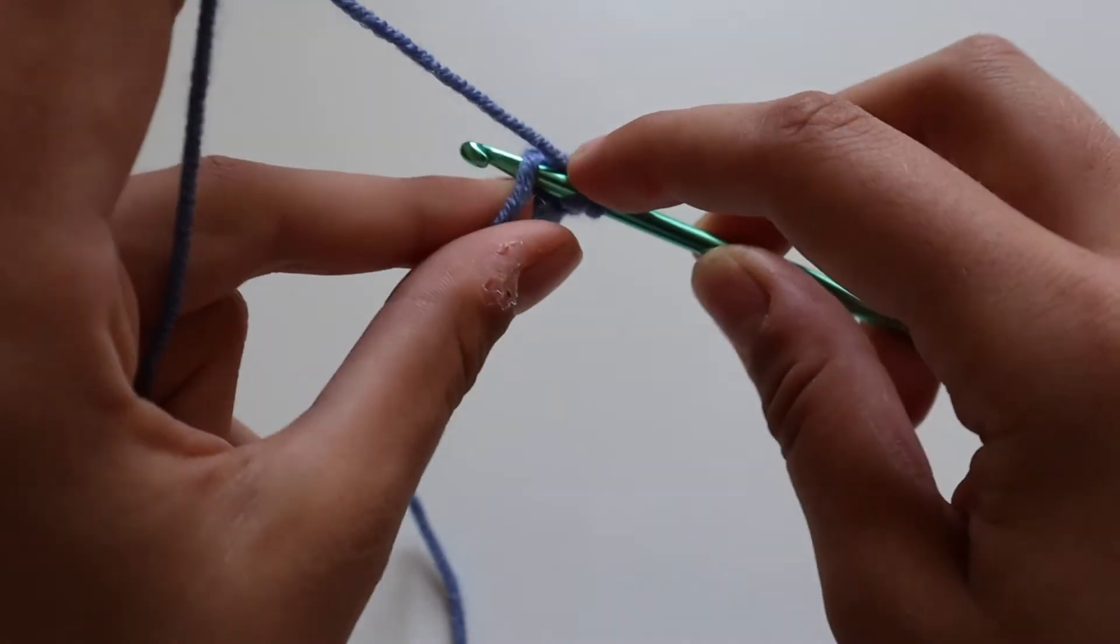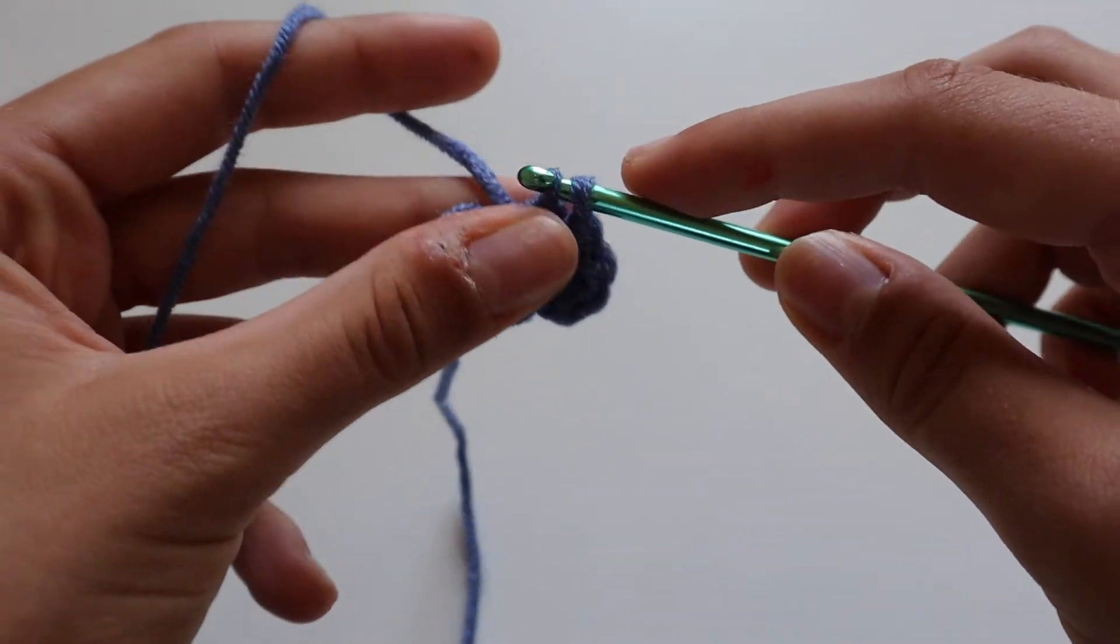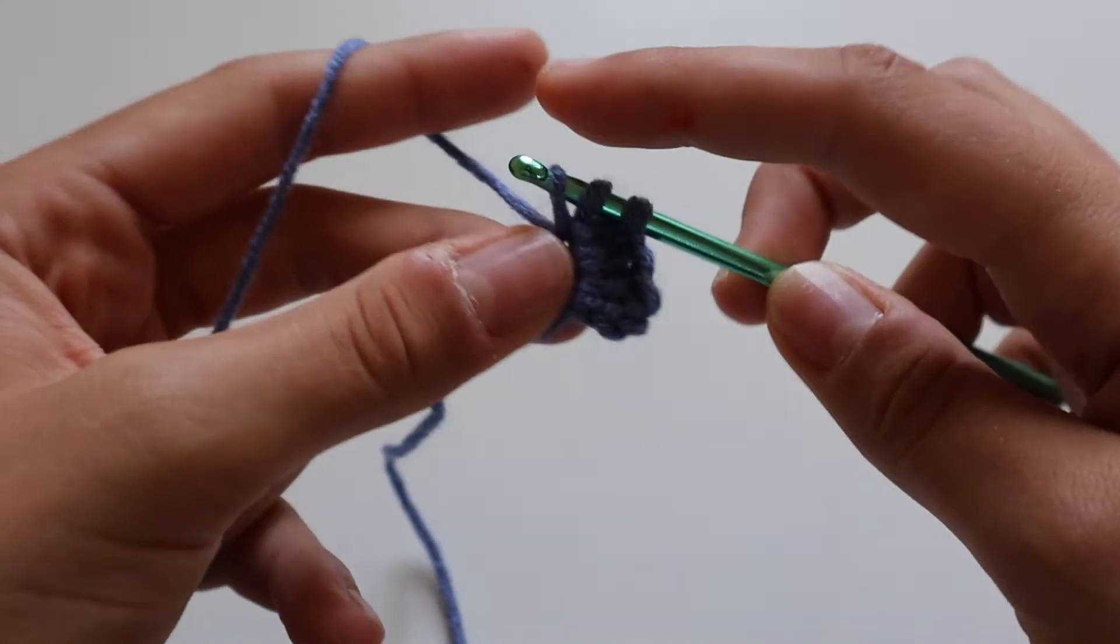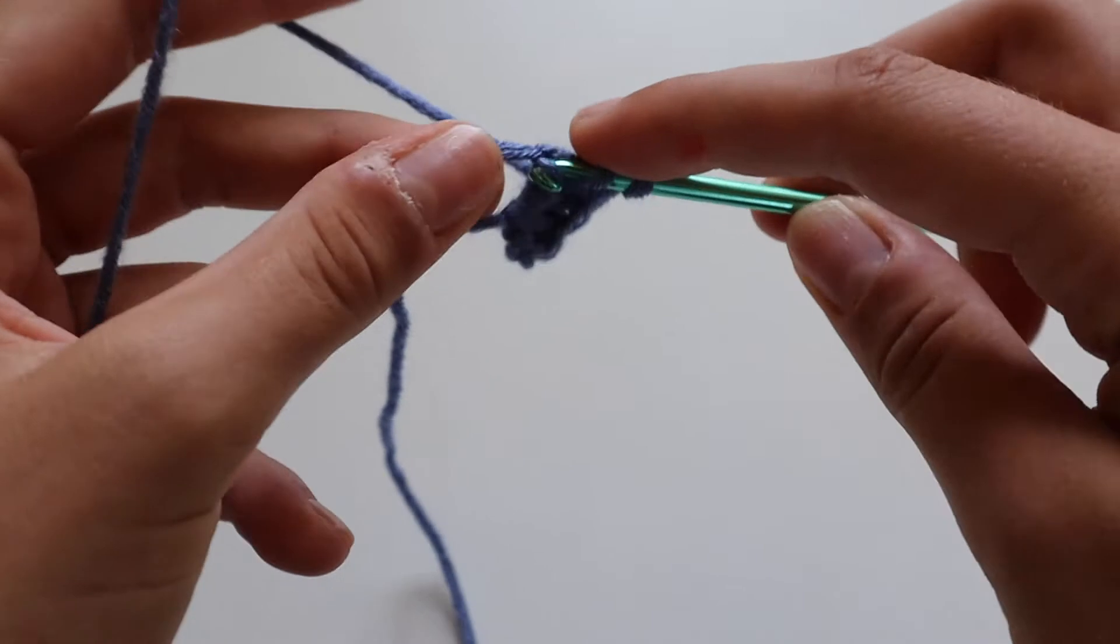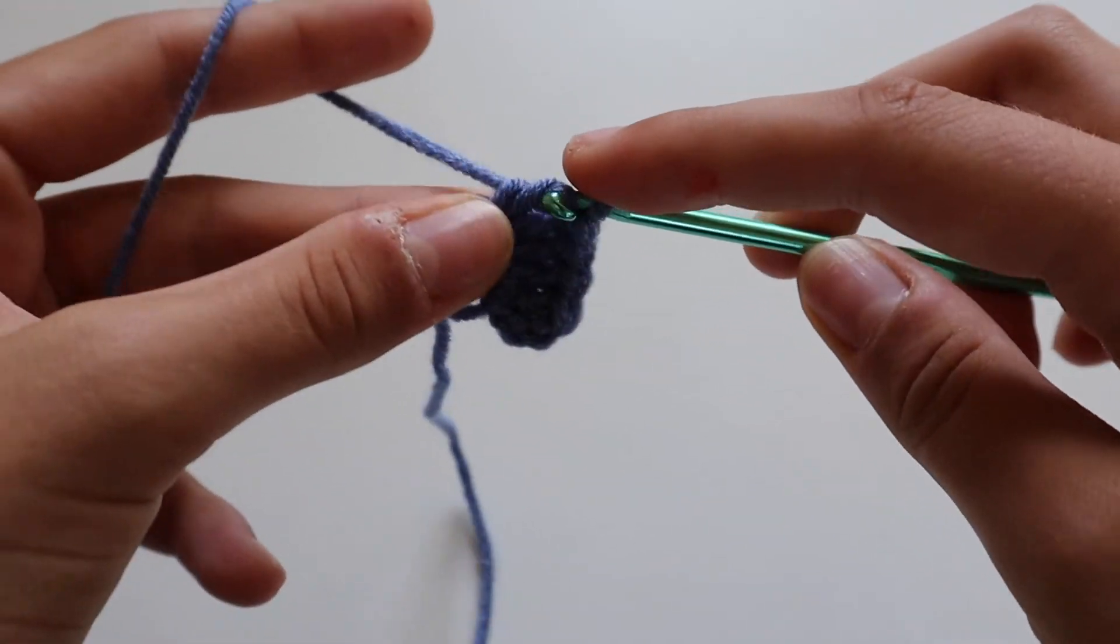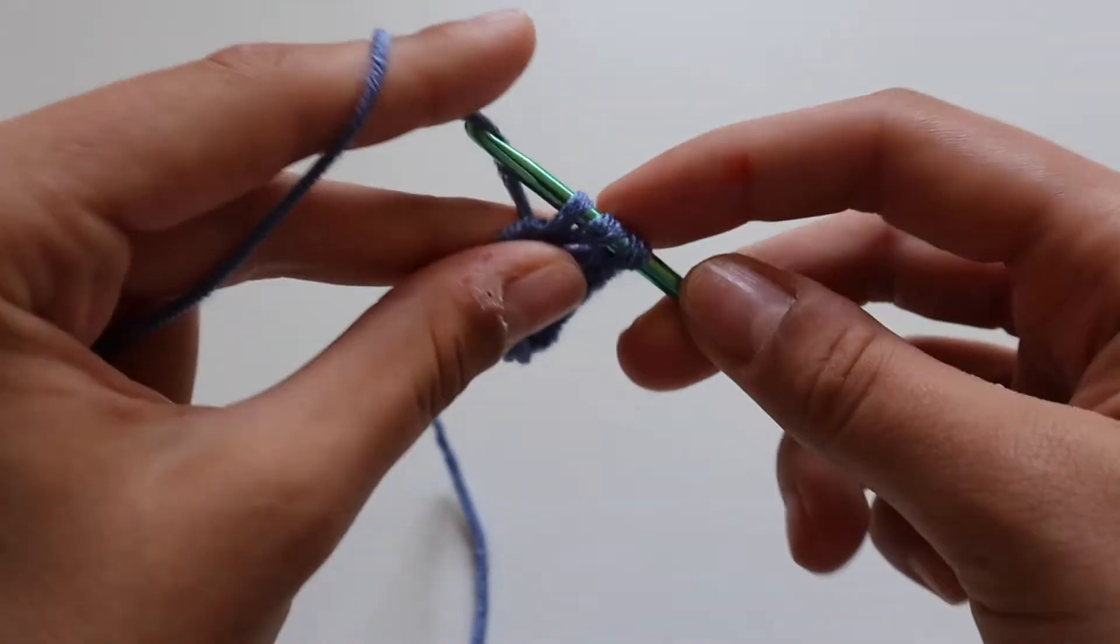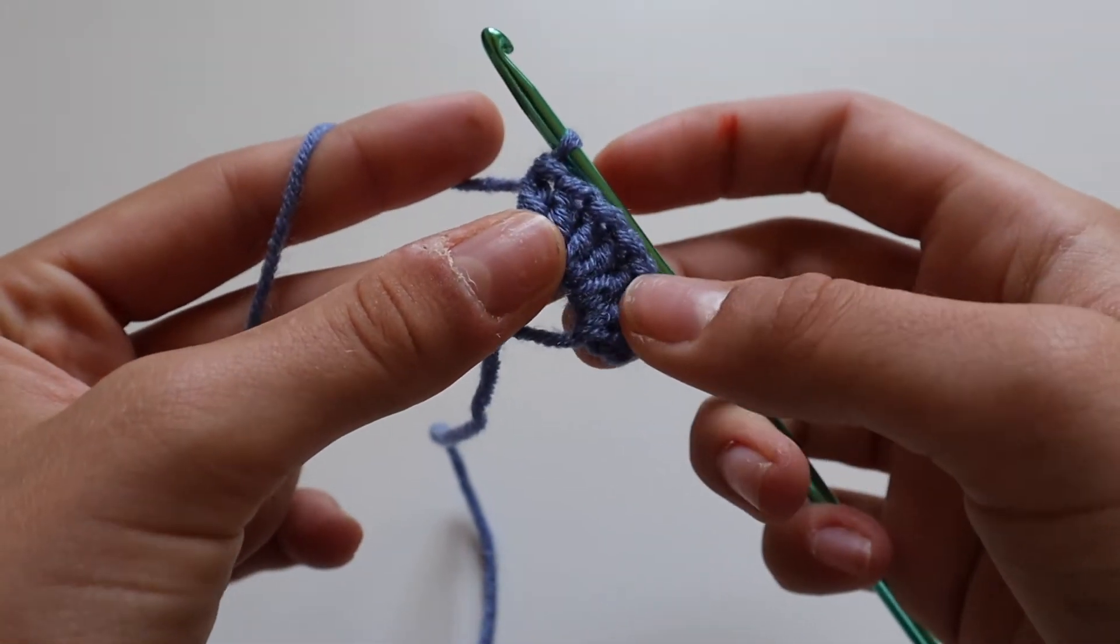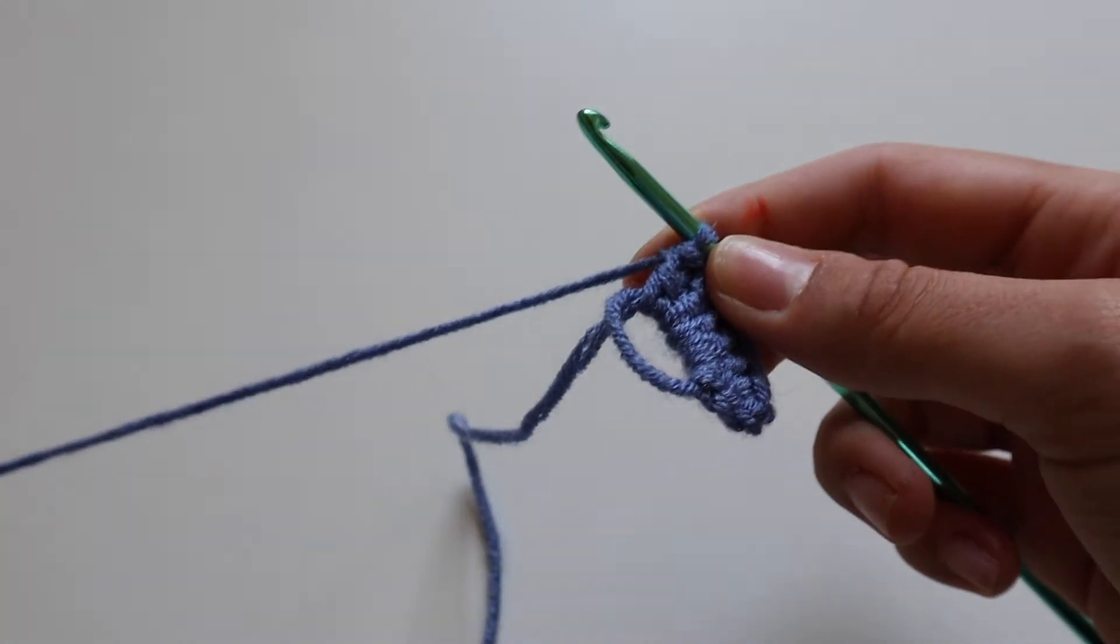Yarn over, insert your hook, yarn over, pull through two loops, yarn over, pull through two, and pull through two. You're going to continue working this so you have a total of seven treble crochets. That's six trebles and your chain of three, which is counting as your seventh treble. One, two, three, four, five, six, seven, that's seven treble crochets.